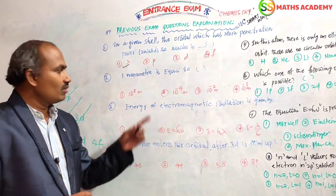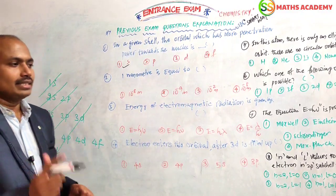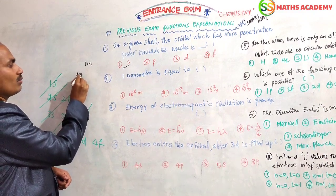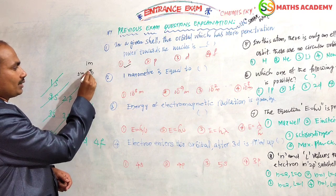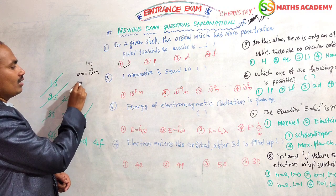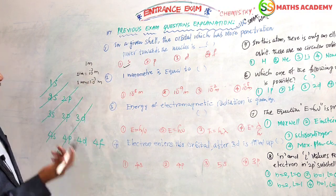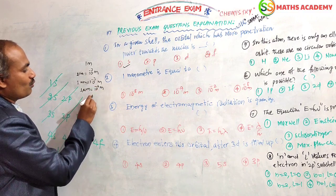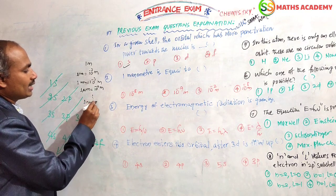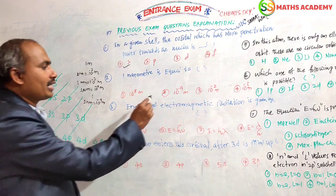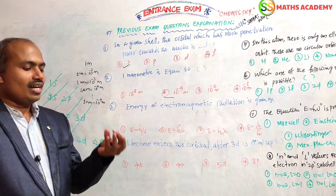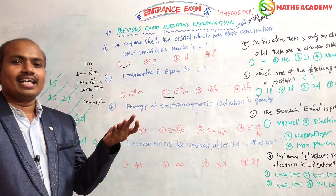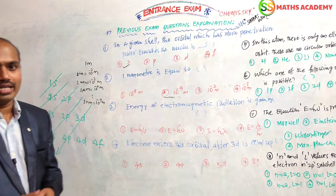Coming to the size question: one nanometer is equal to what? Starting from one meter, one centimeter is 10^-2 m, one millimeter is 10^-3 m, one micrometer is 10^-6 m, and one nanometer is 10^-9 m. Using the prefix series — mono, di, tri, tetra, penta, hexa, octa, nano — the answer is 10 to the power of minus 9 meters.